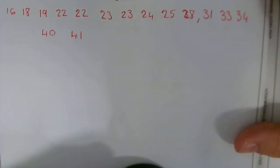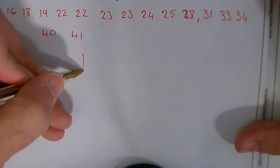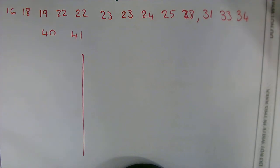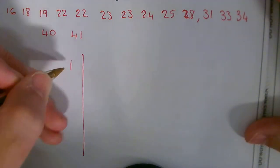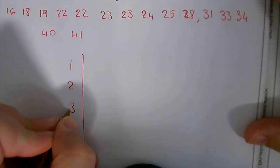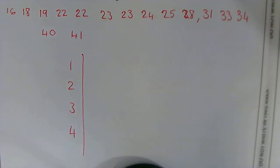I'm going to draw my stem. So I'm going to draw a line going down. My stem is going to be made up from the first digit in this case, because they're two-digit numbers. So the first digits are 1, 2, 3, and 4. I don't need any more than that.